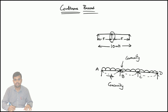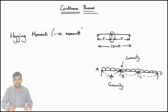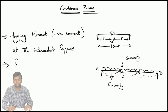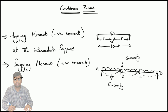When you consider the hogging moments, the hogging moments are taken as negative moments at the intermediate supports. If you consider the sagging moments, the sagging moments are considered as positive moments over the mid-span of the beam.